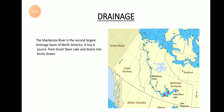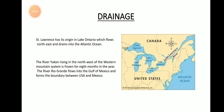The next river is the Mackenzie, which is the second largest drainage basin for North America. It starts from the Great Slave Lake, runs northward, and drains into the Arctic Ocean.